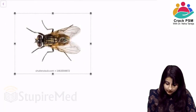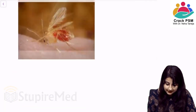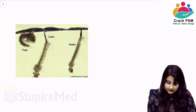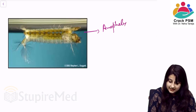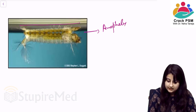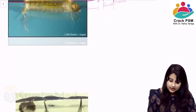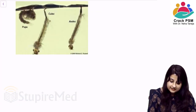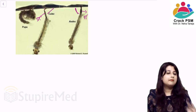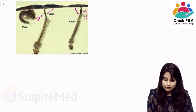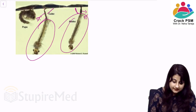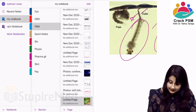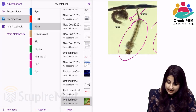Let me show you a picture. Here you can see the larva of Anopheles — it is resting parallel to the water surface because it does not have a siphon tube. This is Aedes and Culex — they have a siphon tube, so they attach at an angle to the water surface. Mansonia is not usually asked. They will give you this picture and ask which vector it represents.